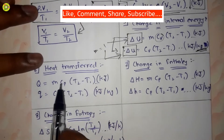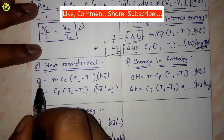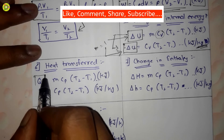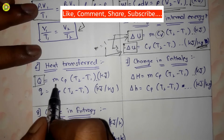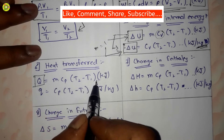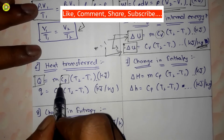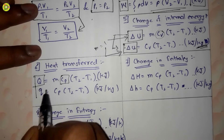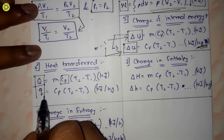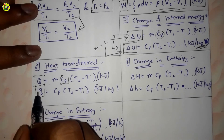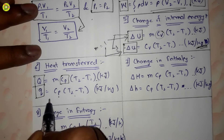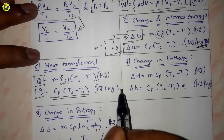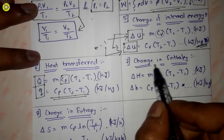Heat transferred is denoted by Q and is equal to mCp(T2 − T1) in kilojoule, where Cp is the specific heat at constant pressure. On a unit mass basis, the specific heat transfer is given by q = Cp(T2 − T1) in kilojoule per kg.